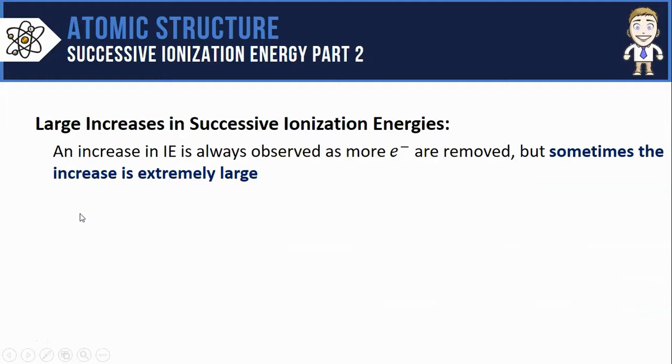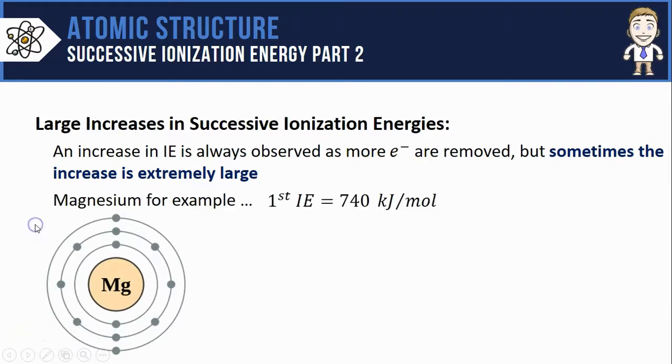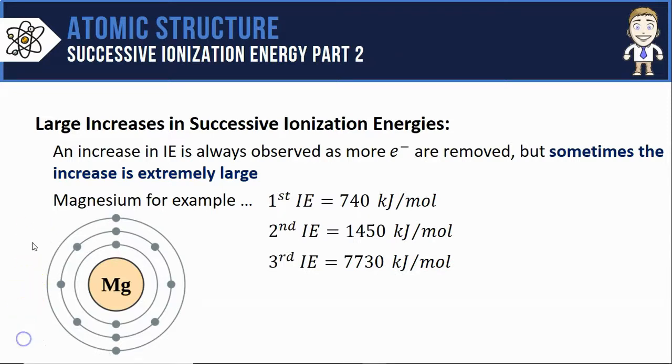Get to see that an increase in ionization energy, like we just talked about, is always observed as more electrons are removed. But sometimes that increase is extremely large, and we have to be able to explain that too. Magnesium is a good example of this, with the first, second, and third ionization energies shown here. Notice to remove...